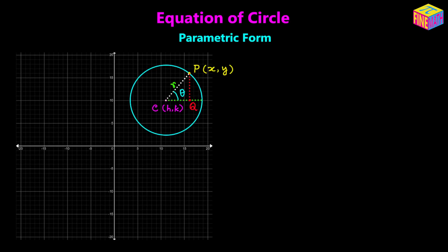Let's suppose lower case R is the radius of the circle. Then we can say CP will be equal to R, and then what will be CQ? Well, CQ will be R cosine of theta because CQ over R will be cosine of theta, so CQ can be written as R times cosine of theta. And similarly, PQ over R will be equal to sine of theta, so we can say PQ will be equal to R times sine of theta.